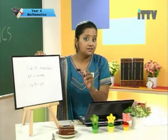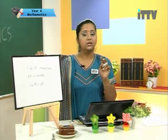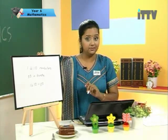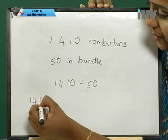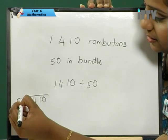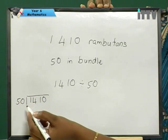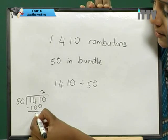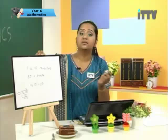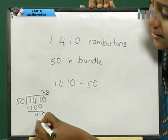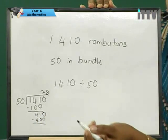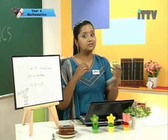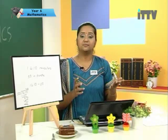Remember in the last lesson I told you there are two ways to do it — you can do actual long division or you can do it the short way. Let's try the short way. 1,410 divided by 50: you get 28, with a balance of 10 rambutans. Simple and easy.